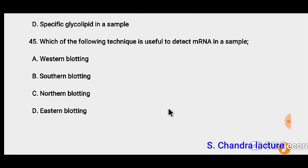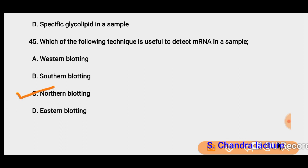Question 45: Which technique is useful to detect mRNA in a sample? Northern blotting is used for mRNA detection. So the correct option must be C.